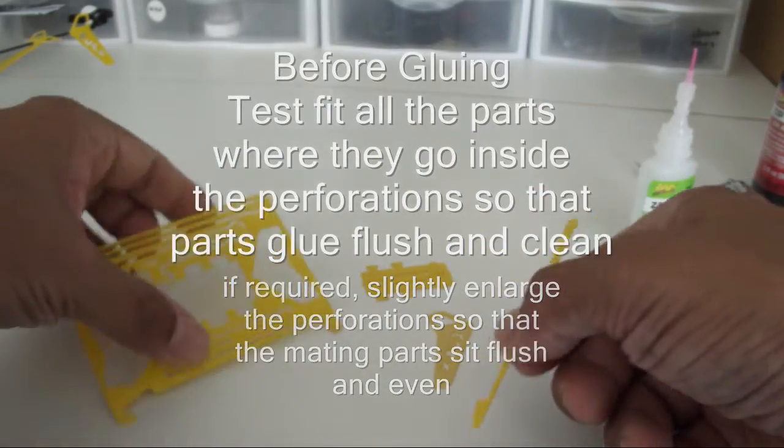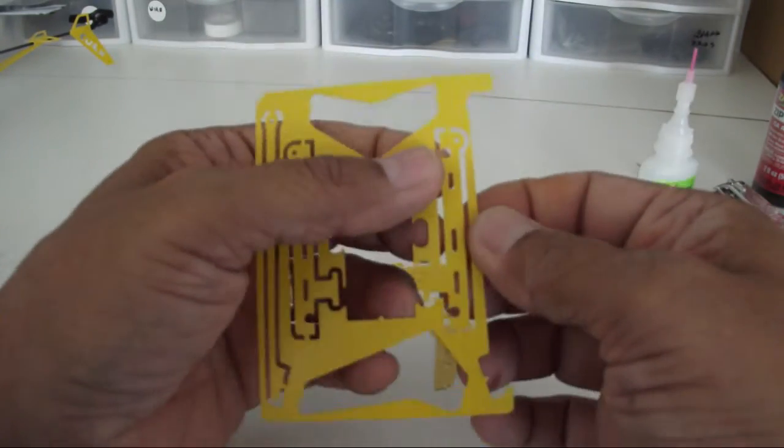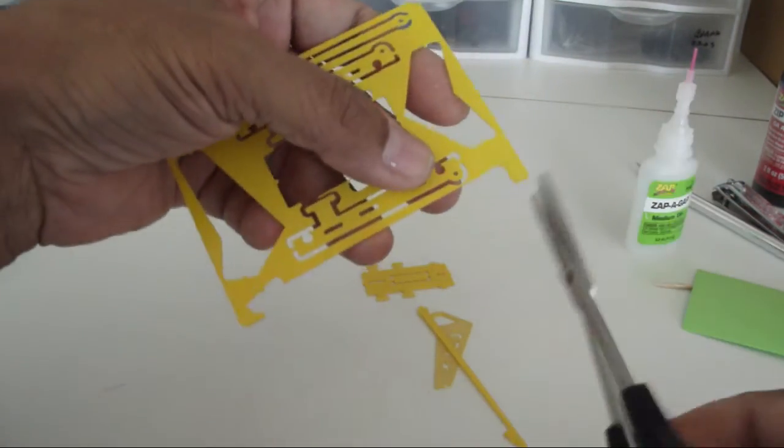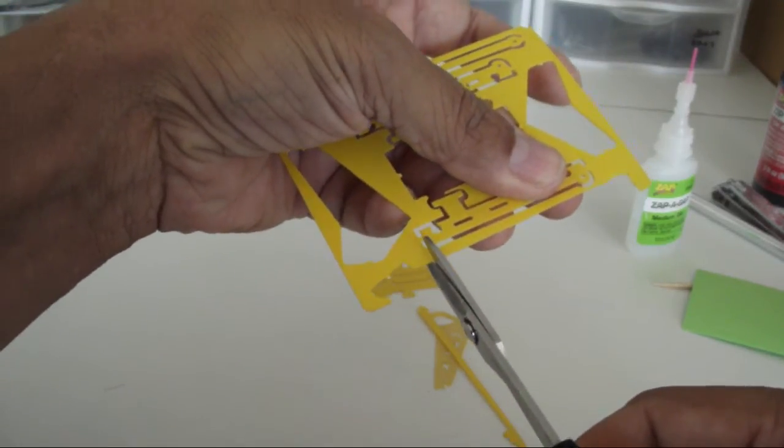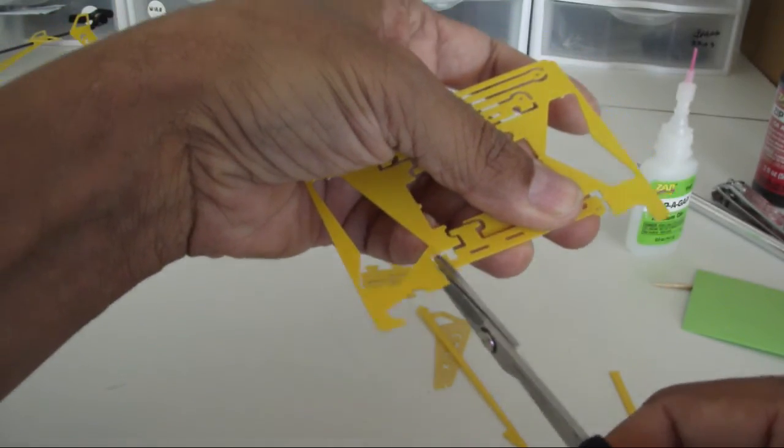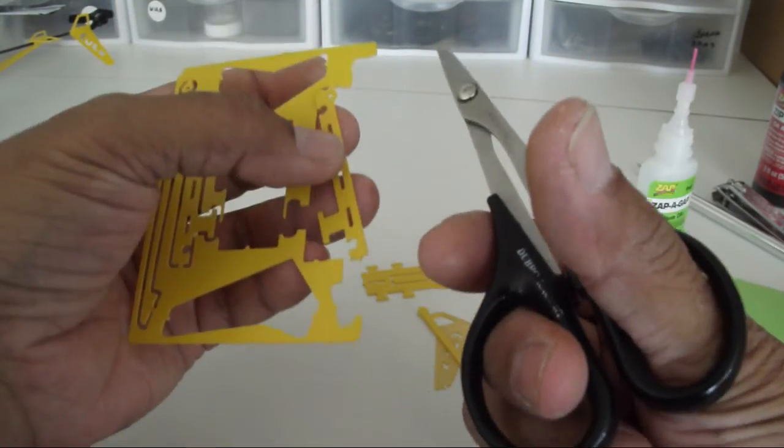So continue to remove the parts. Once again, if the parts are thin, use the scissors. This material cuts very easy with the hobby scissors, such as the one that I'm using here.